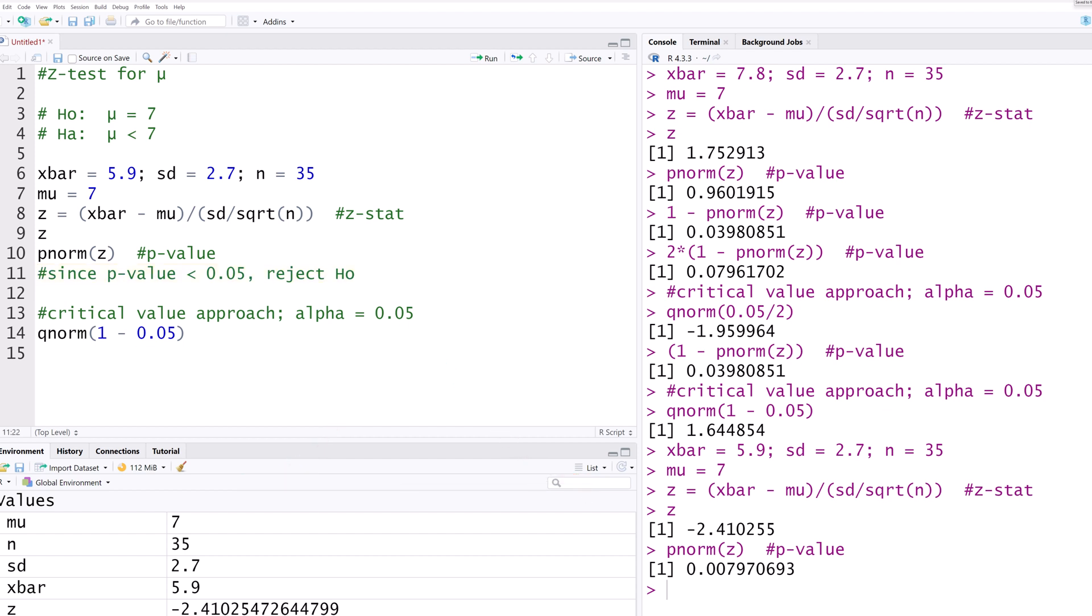Note that if alpha were 0.01, the result would still be significant, since this P value is still less than 0.01.